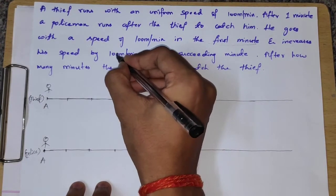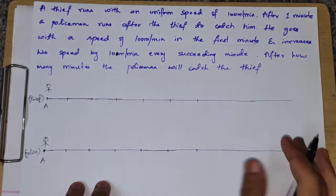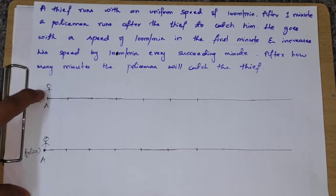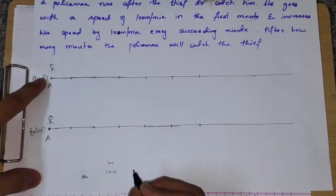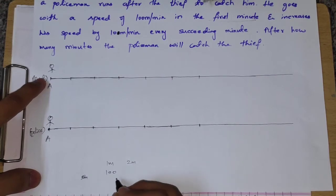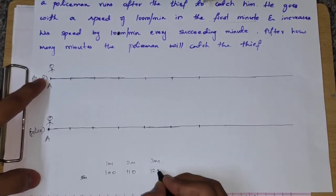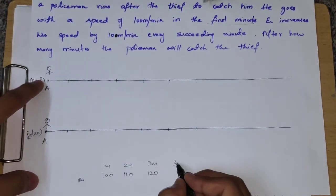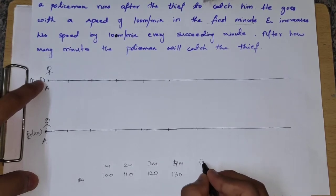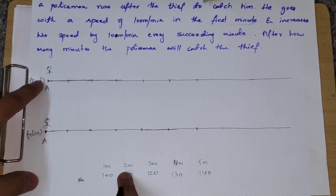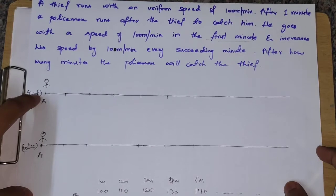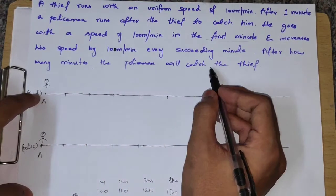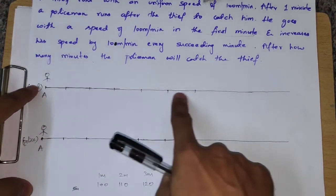Sorry — the policeman starts at 10 meters per minute and increases by 10 meters every succeeding minute: so in the second minute 10, then increasing. After how many minutes will the policeman catch the thief? If the police's rate forms an arithmetic progression, they will meet at some point.